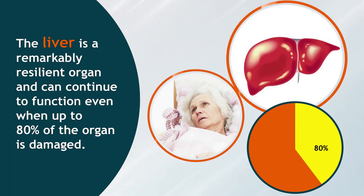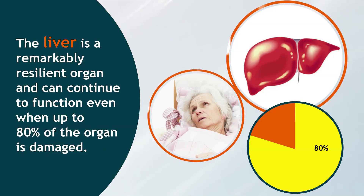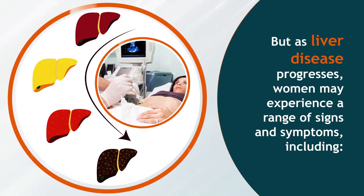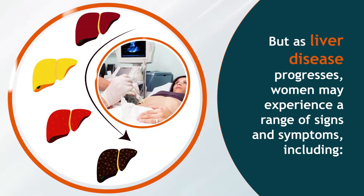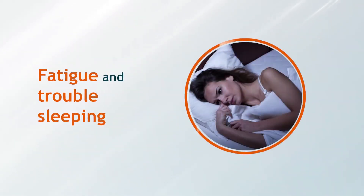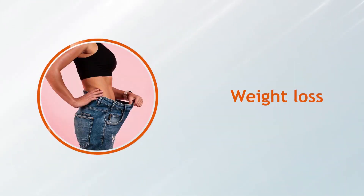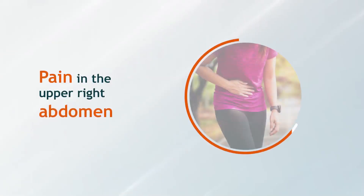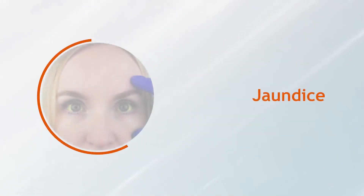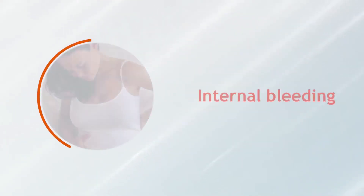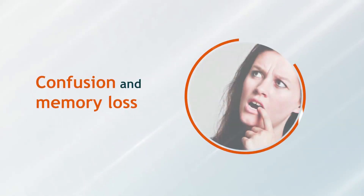Signs of liver disease in women. The liver is a remarkably resilient organ and can continue to function even when up to 80% of it is damaged. However, as liver disease progresses, women may experience a range of signs and symptoms including fatigue, trouble sleeping, weight loss, missed periods, difficulty getting pregnant, pain in the upper right abdomen, jaundice, edema, and abdominal swelling.